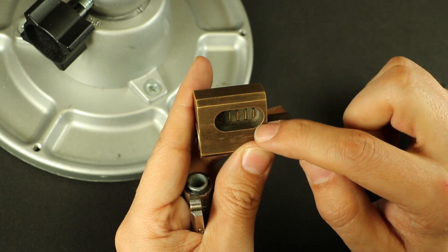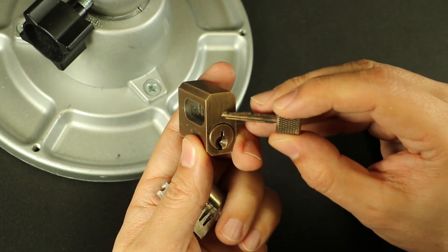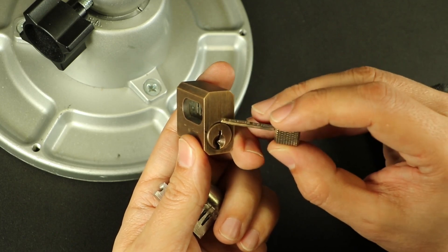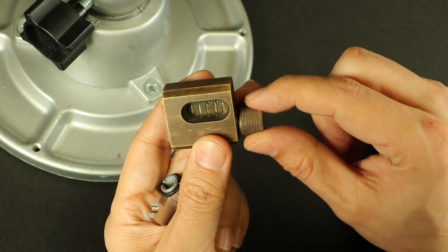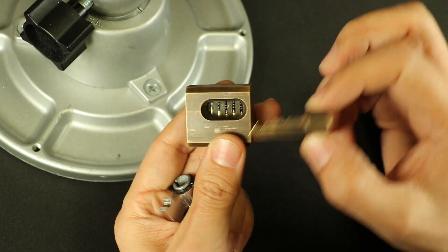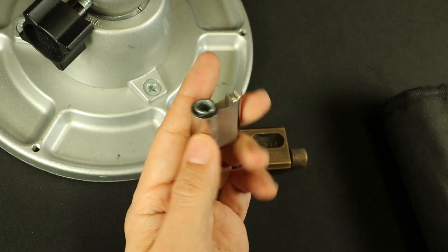The shear line is between this plug and the housing, where all the pins are lined up. That's where the plug has to rotate and that allows it to spin freely. You can look up a bunch of tutorials on how to pick these online and how all the shear lines and stuff work.